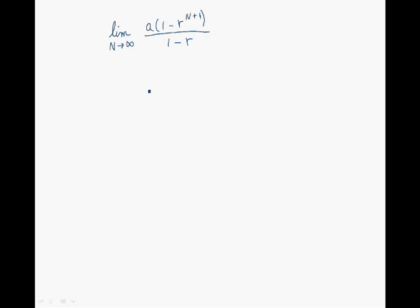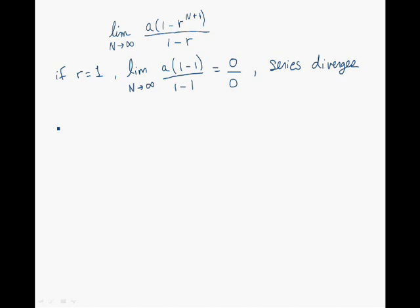Let's begin by looking at what happens when R is equal to 1. When R equals 1, the limit simplifies: on the numerator we have 1 minus 1, and on the denominator 1 minus 1, so the limit is equal to 0 over 0. The limit does not tend towards a finite number. Hence, the infinite sequence diverges in this case, and the infinite series also diverges.